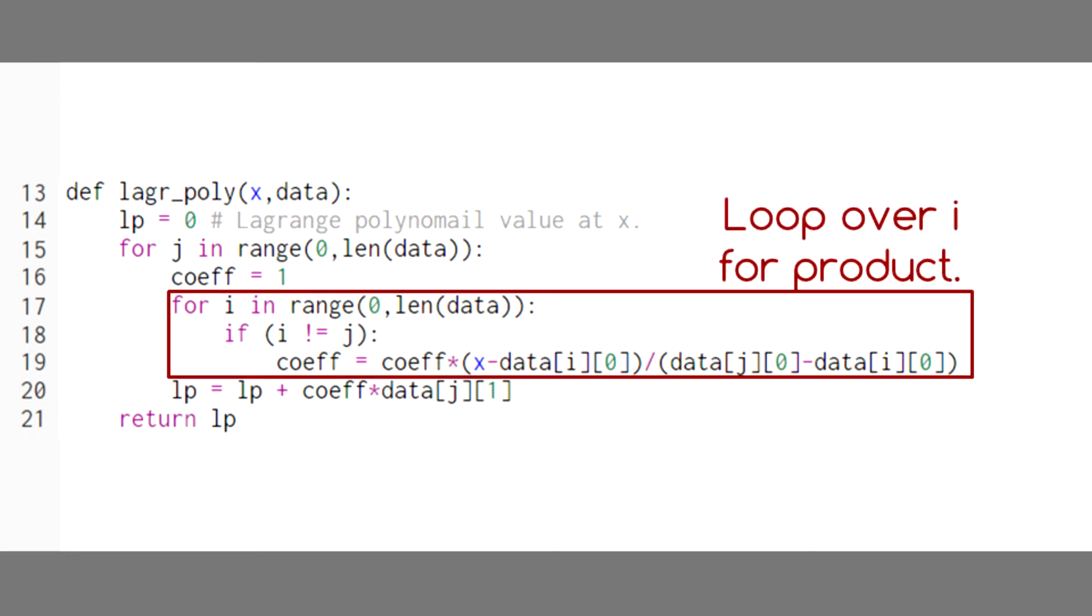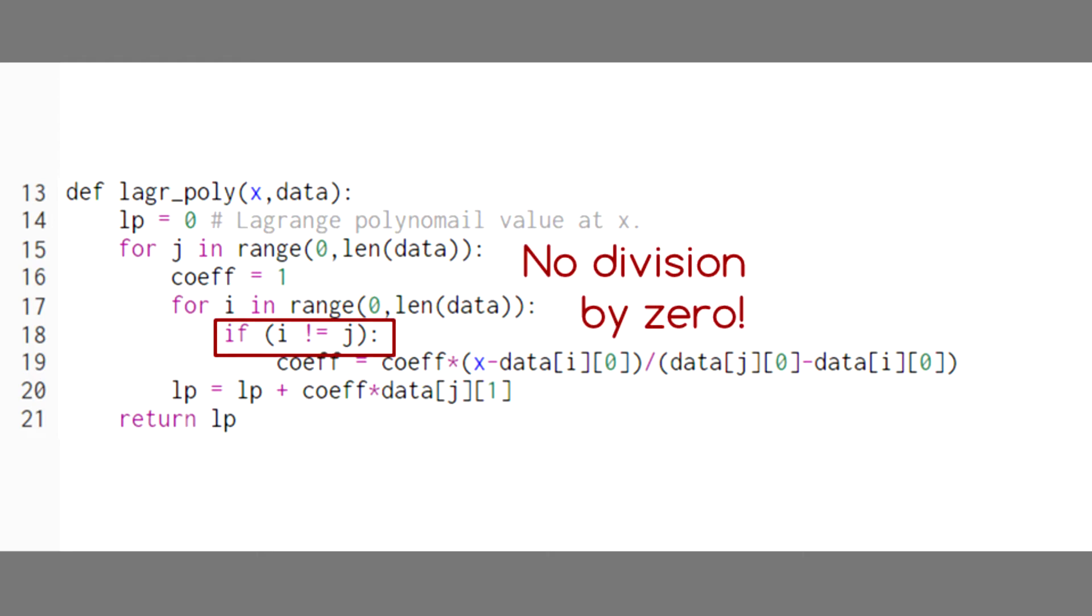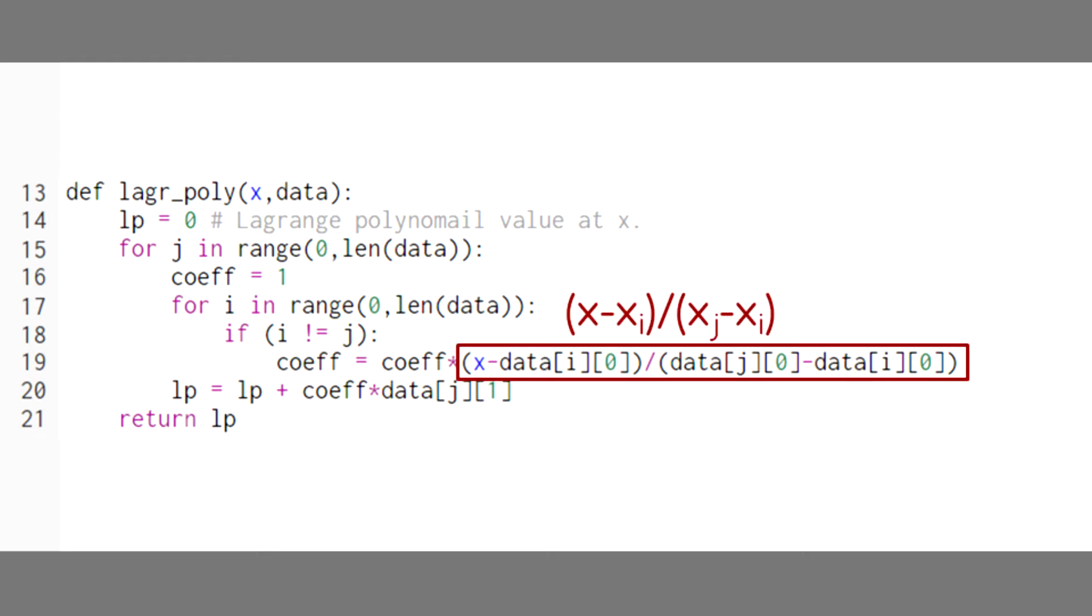Here we set up our product, looping over a new index i. Here we make sure we skip over i equals j, and then we multiply our product by x minus xi and divide by xj minus xi. After finishing the product, we multiply by the value of the dependent variable and add this term to our polynomial.